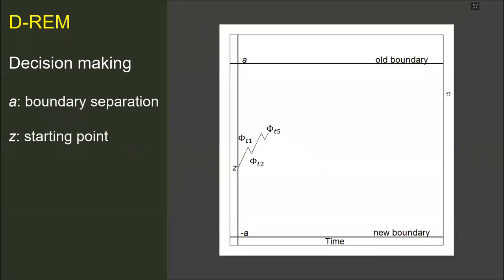There are two decision boundaries for yes and no response options. The boundary separation is determined by the parameter a. The a value is the boundary of a yes decision, while minus a is the boundary of a no decision. The accumulation of evidence continues until it reaches the yes or no decision boundaries. The starting point of evidence accumulation is determined by the parameter z. A value of 0 indicates an unbiased position. The odds ratio is added to the starting point value.